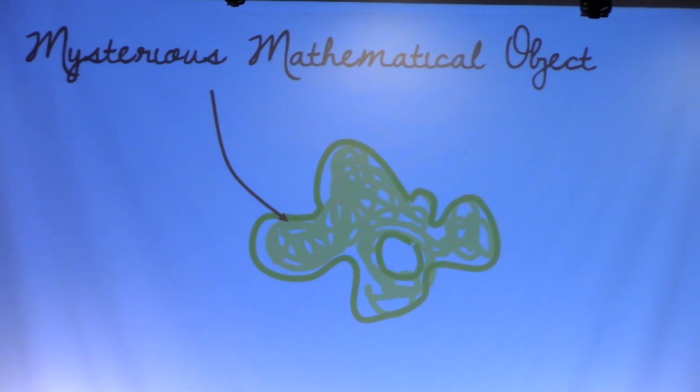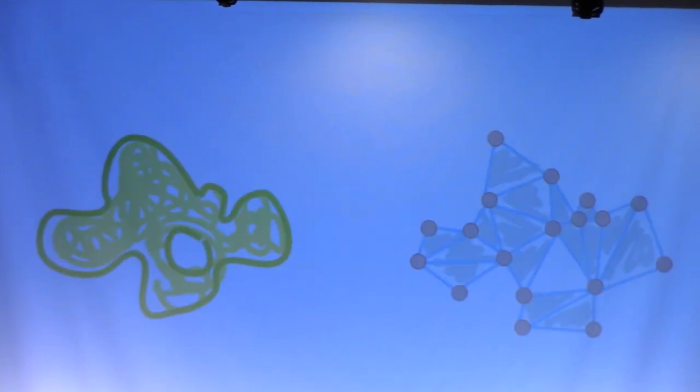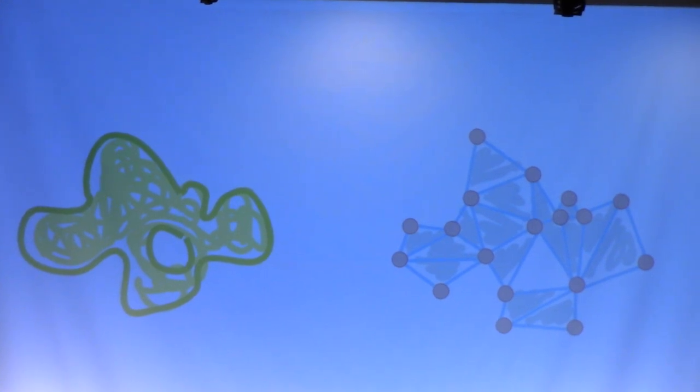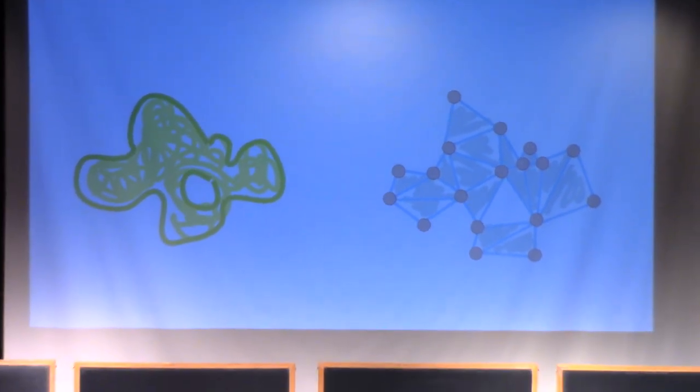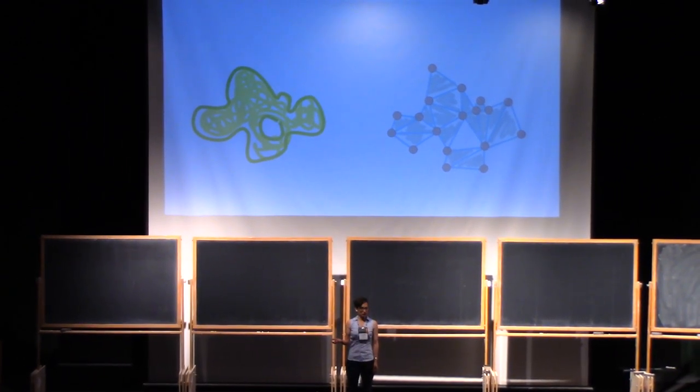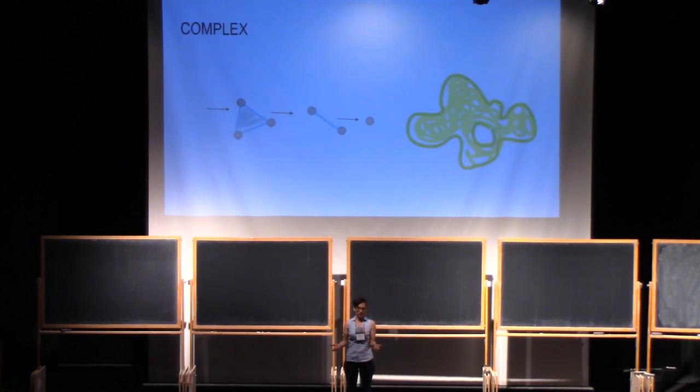So what I might do is take some things that I do understand, like vertices and edges and faces and simplices, and start putting them together in some way until I get something that kind of looks like this green blobby thing I don't know much about. But I'm a mathematician, so I want to make sure that you can put things together in the same way I did to understand how we're going to approximate this green blobby thing. And that's what we're doing when we build a complex.